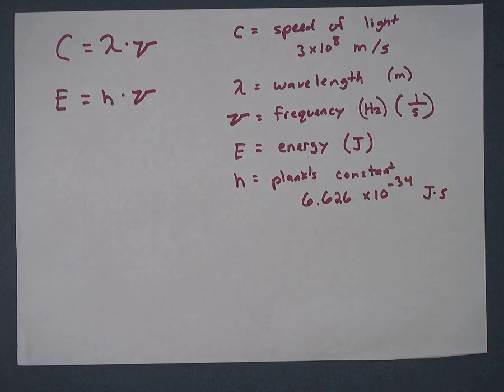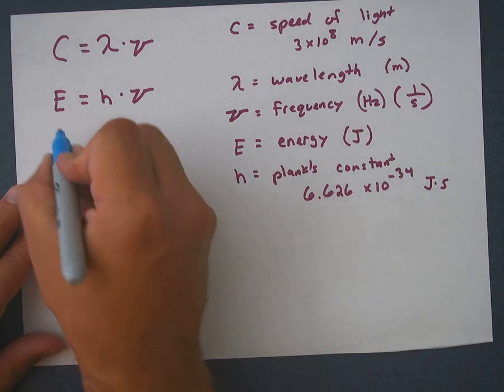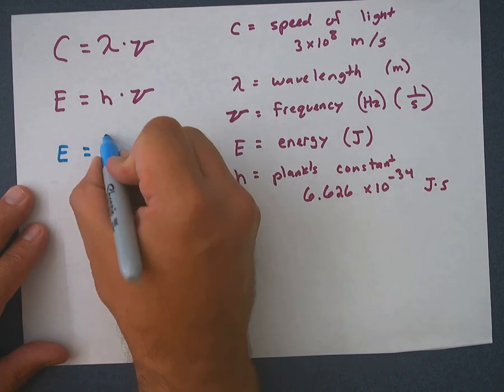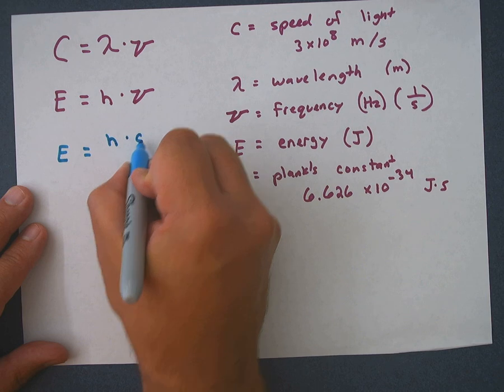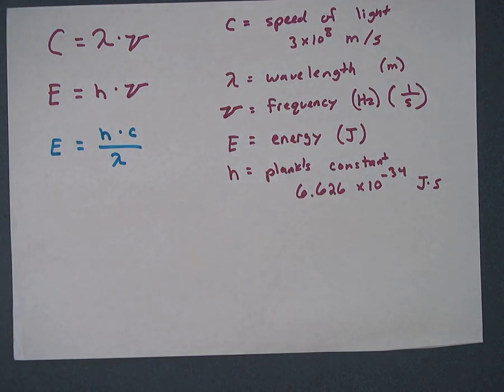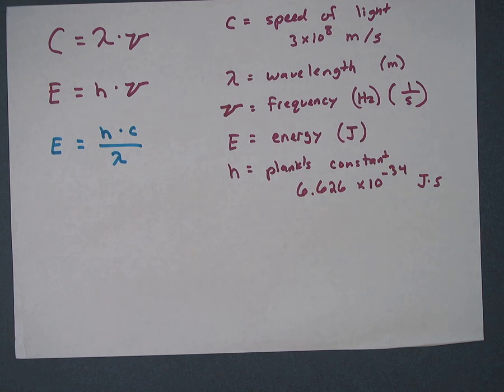Now, it's really common to combine these two formulas together by doing the substitution stuff. And you could actually combine and get this formula: Energy equals Planck's constant times the speed of light over wavelength. So this is kind of like a substitution if we were to move some variables around and combine them.